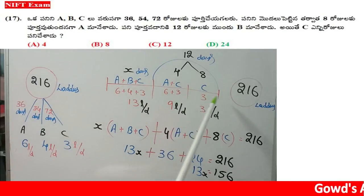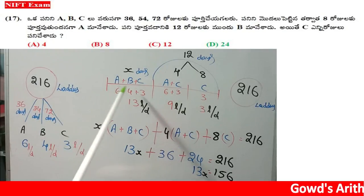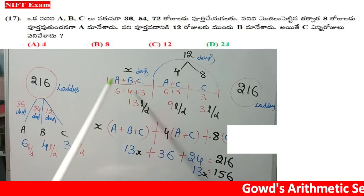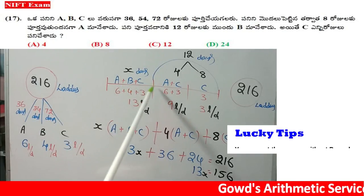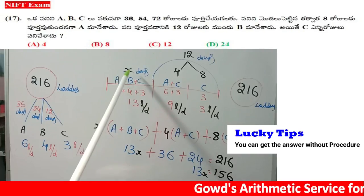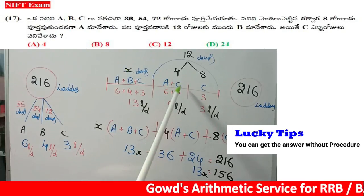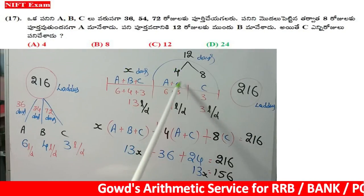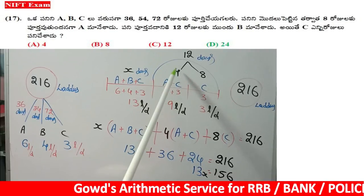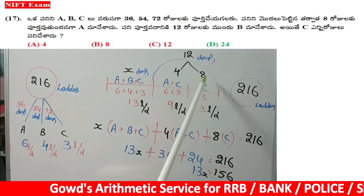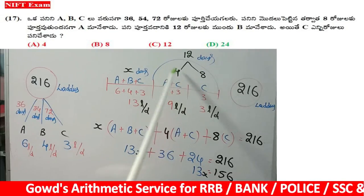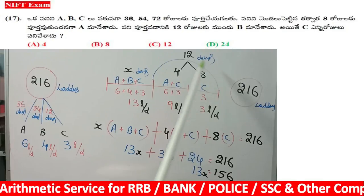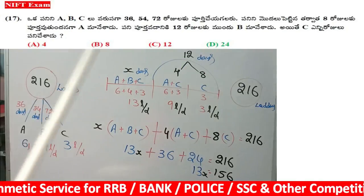We already have the graph — Graph 8. This is a lucky tip. A plus B plus X, then A plus C: 4 and 4. Then C: 8. Total 12. Lucky tip. Graph 8. Okay.